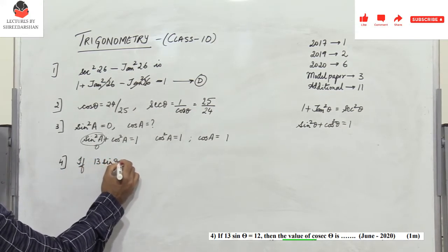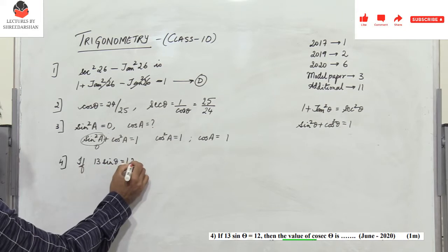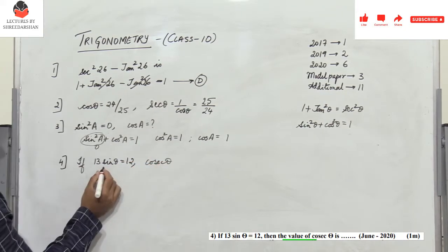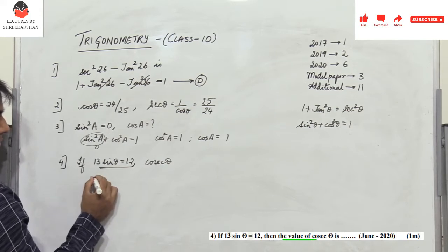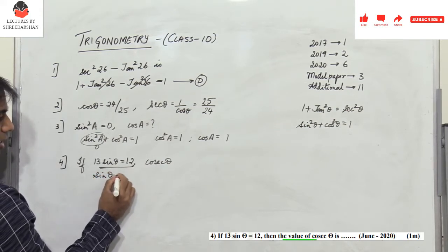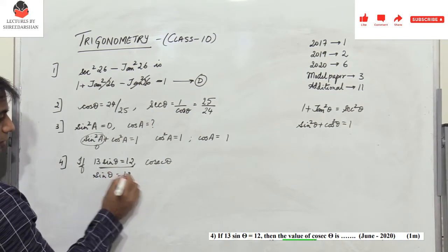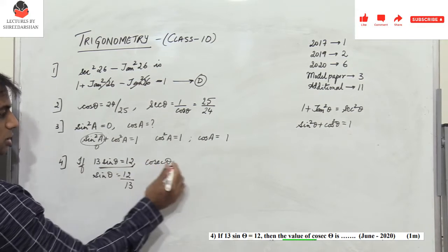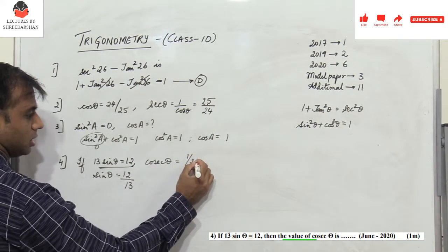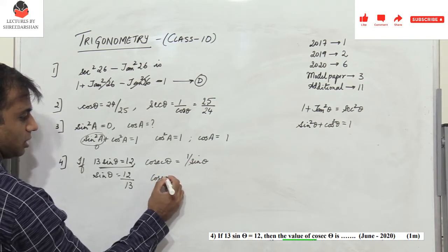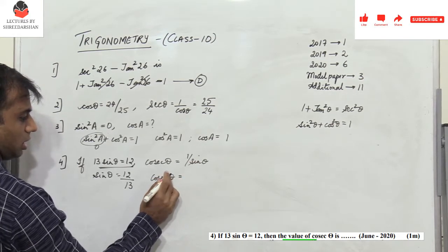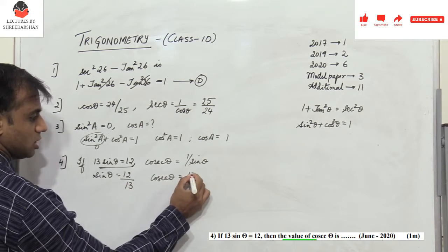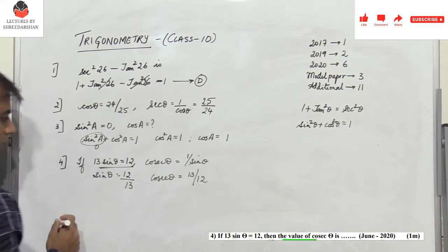Problem 4: if 13sinθ = 12, what is cosecθ? From this expression, sinθ = 12/13. Since cosecθ = 1/sinθ, we take the reciprocal to get cosecθ = 13/12. Very easy problem.